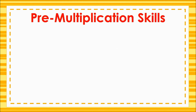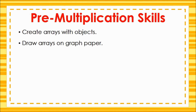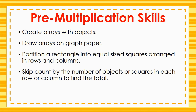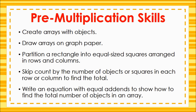To recap, second grade standards prepare students for area and multiplication by creating arrays with objects, drawing arrays on graph paper, partitioning a rectangle into equal size squares arranged in rows and columns, skip counting by the number of objects or squares in each row or each column to find the total, and writing an equation with equal addends to show how to find the total number of objects in an array. Participating in these activities will help our second graders build the knowledge and understanding they need in order to be successful with multiplication and area in the third grade.